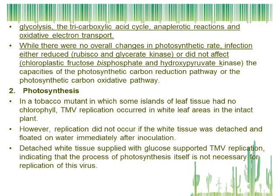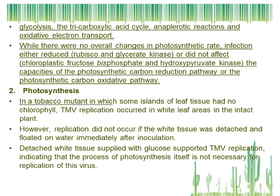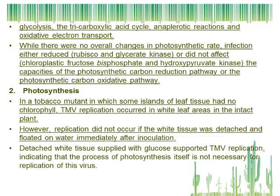Number two: Photosynthesis. In a tobacco mutant in which some islands of leaf tissue had no chlorophyll, TMV replication occurred in the white leaf areas in the intact plant. However, replication did not occur if the white tissue was detached and floated on water immediately after inoculation. Detached white tissue supplied with glucose supported TMV replication, indicating that the process of photosynthesis itself is not necessary for replication of this virus.